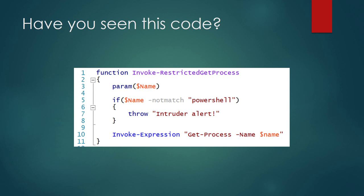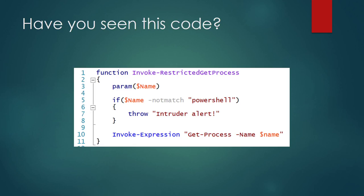Have you seen code like this — can anybody spot a fault? Have you seen Invoke-Expression here? I want to make a note about Invoke-Expression. Although this looks correct — get process name, dollar name — you are taking input from the user, and this script has some kind of validation. But with a simple semicolon, you can do a lot of bad stuff.